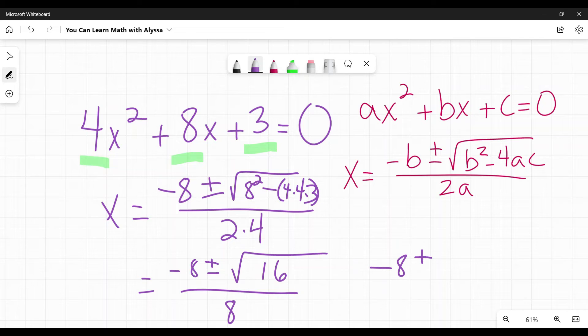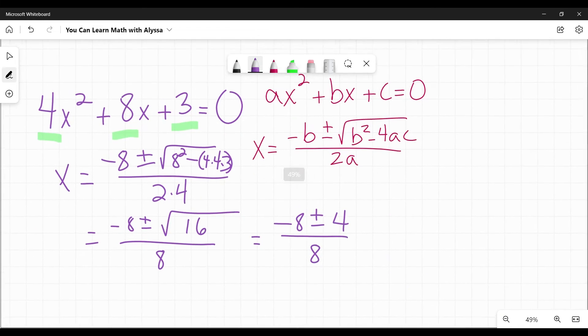Now the square root of 16 is four. So now I have, it is negative eight plus or minus four over eight. This is the point where you separate them. And to get your two answers, you're going to do those separately, negative eight plus four over eight and negative eight minus four over eight.